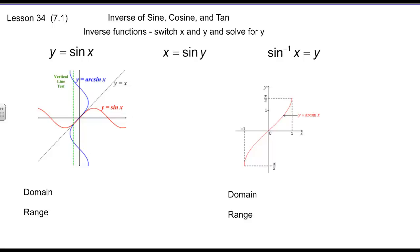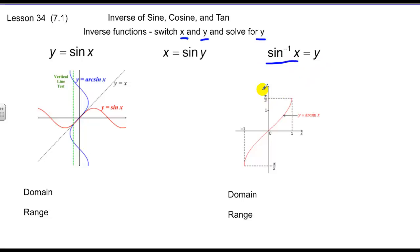Today we're going to look at inverse sine, cosine, and tangent functions. From previous discussion, inverses of functions basically involve switching the x and the y and solving for y. We also know that these functions are symmetric about the line y equals x. So if you have y equals sine of x, then x equals sine of y when we find the inverse, and you take the inverse sine of x to get y.